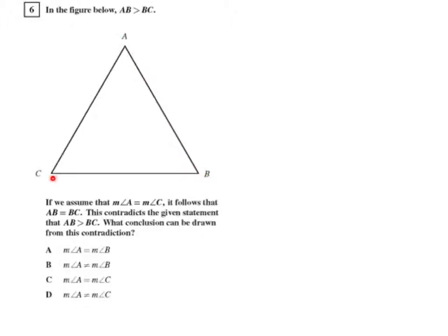AB is greater than BC. If we assume that the measure of angle A equals the measure of angle C, it follows that the length of AB equals AC. This contradicts the given statement that the length of AB is greater than the length of BC.